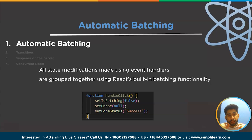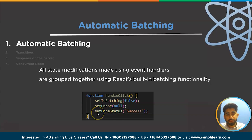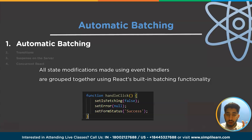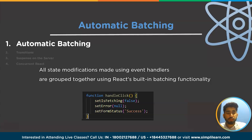Earlier, the program used to re-render at each step. Now with automatic batching it will only render at the end of the task. For example, in this program, setIsFetching, setError, and setFormStatus — earlier each call triggered a separate render. Now React will batch all three state updates and render only once at the end.